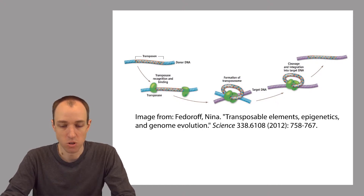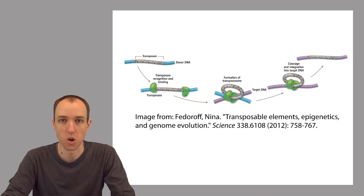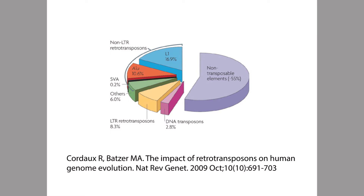This diagram shows one such example of how a cut and paste mechanism happens — how a transposable element can cut and paste itself throughout the genome, with the help of an important protein called a transposase. This kind of thing has happened many, many times throughout evolutionary history to the human genome, to the point where about 45 percent of the human genome sequence is covered by transposable elements — 45 percent of all the bases came from a transposable element.